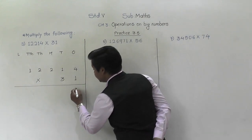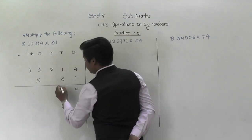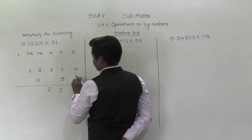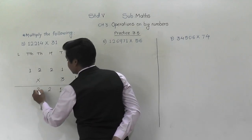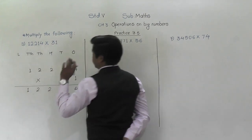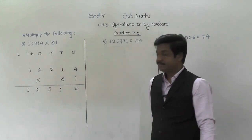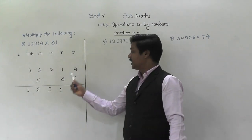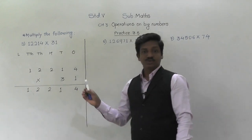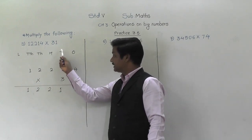First, we will multiply 12,214 by one. One fours are four. Then one ones are one. One twos are two. One twos are two. And one ones are one. So we have multiplied this number by one. Now we are going to multiply by the tens place digit, that is three.